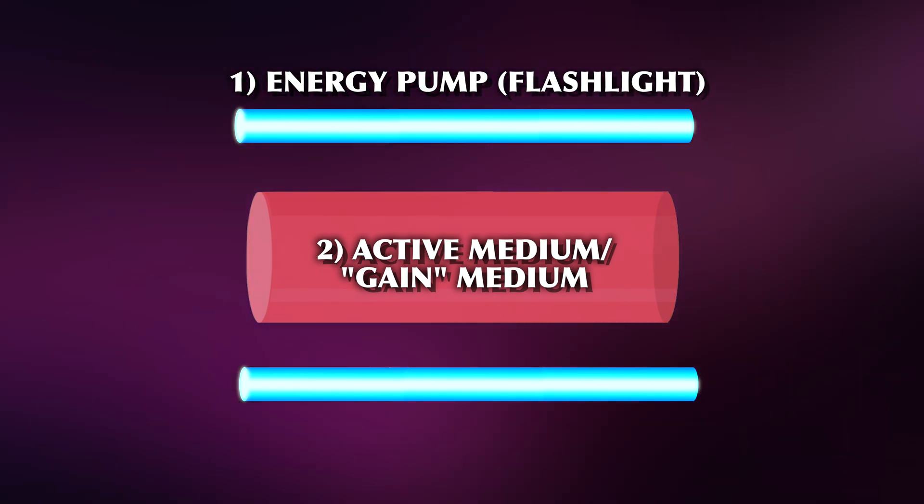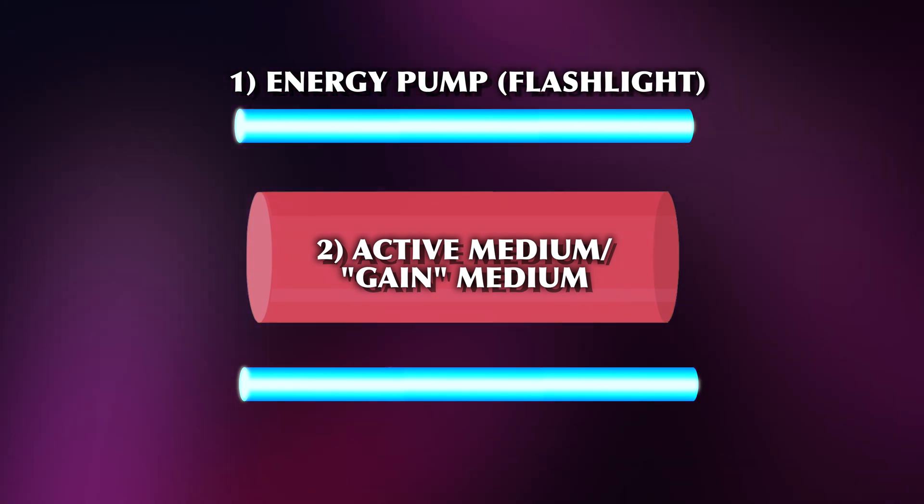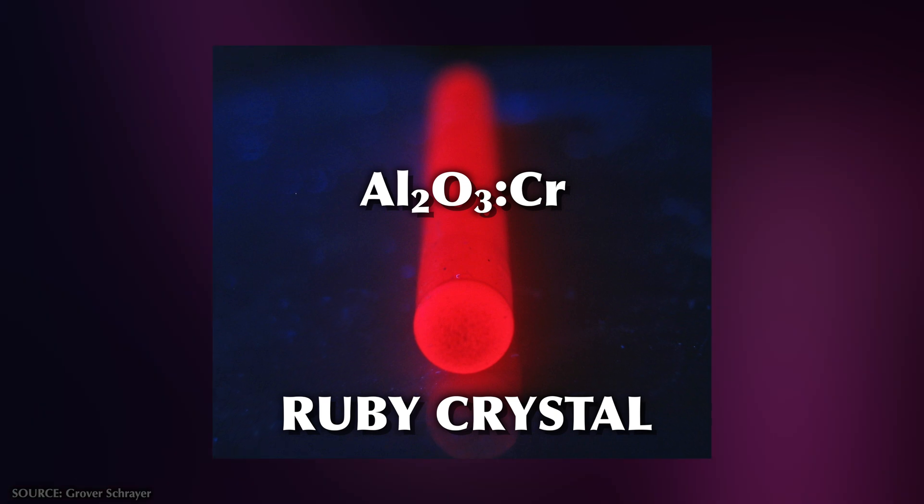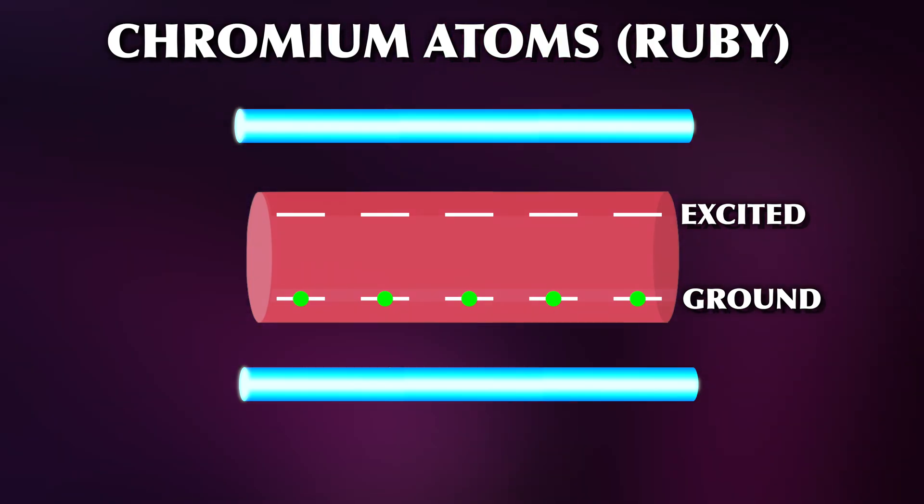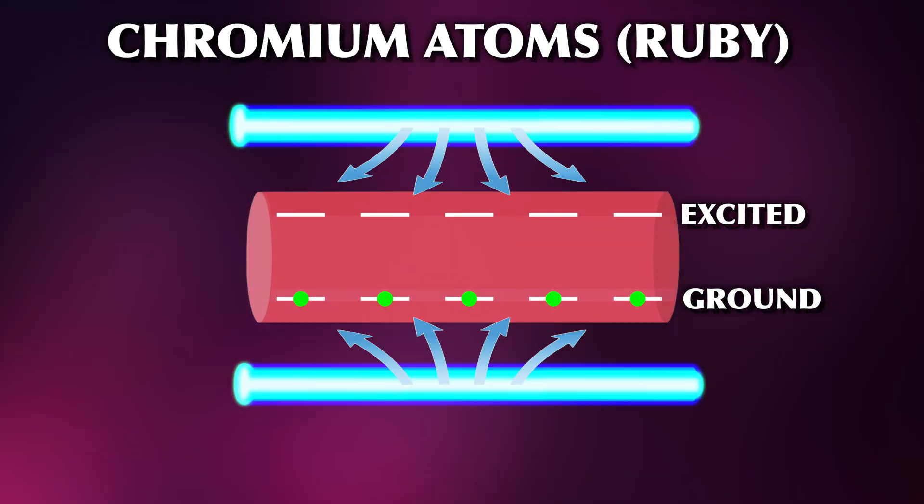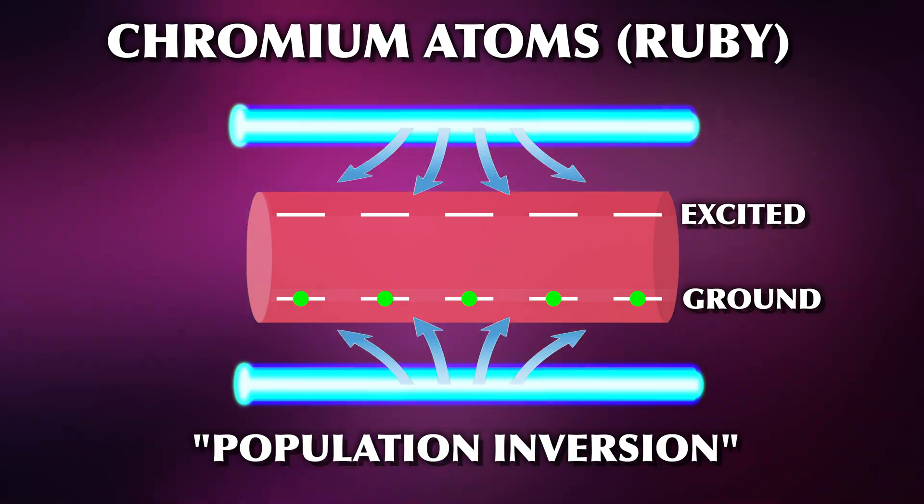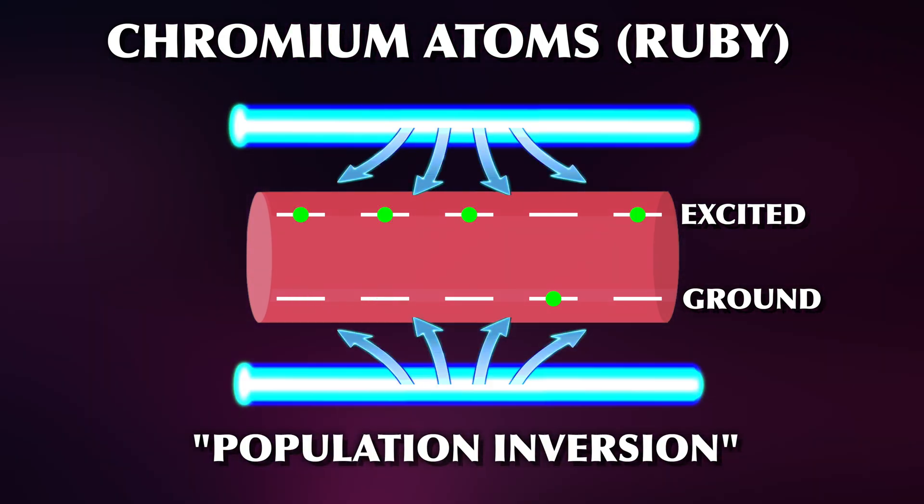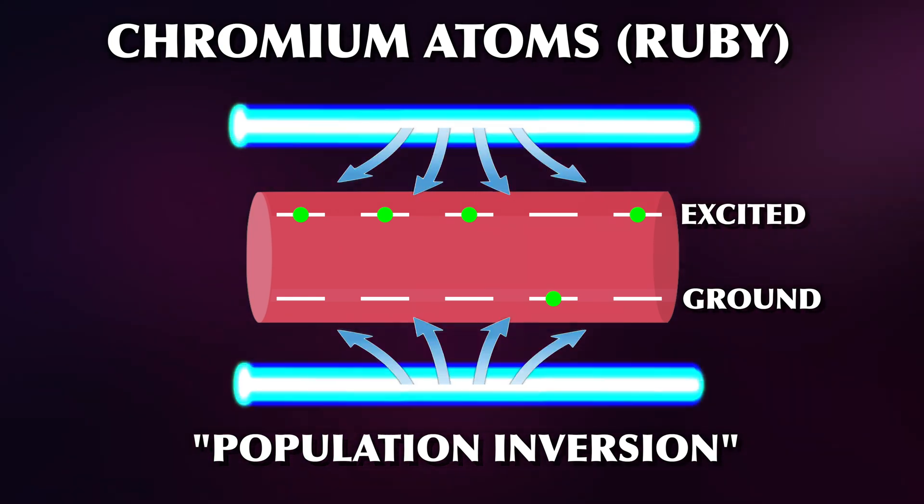The second part is the active medium or gain medium. This is where all the atoms sit. Historically, the first laser was constructed around a ruby crystal. Aluminium oxide with chromium. The chromium atoms are the ones absorbing the pump photons, creating what is called a population inversion. Due to the energy supply, most of the atoms are moved up into the excited state.